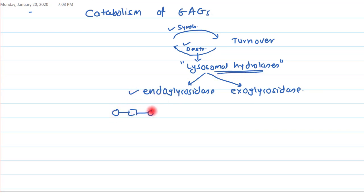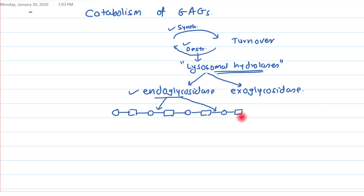If this is a polymer of mucopolysaccharide or glycosaminoglycans, then endoglycosidase will break down the internal bonds of the polymer, whereas exoglycosidase breaks down from the terminals of this polymer.